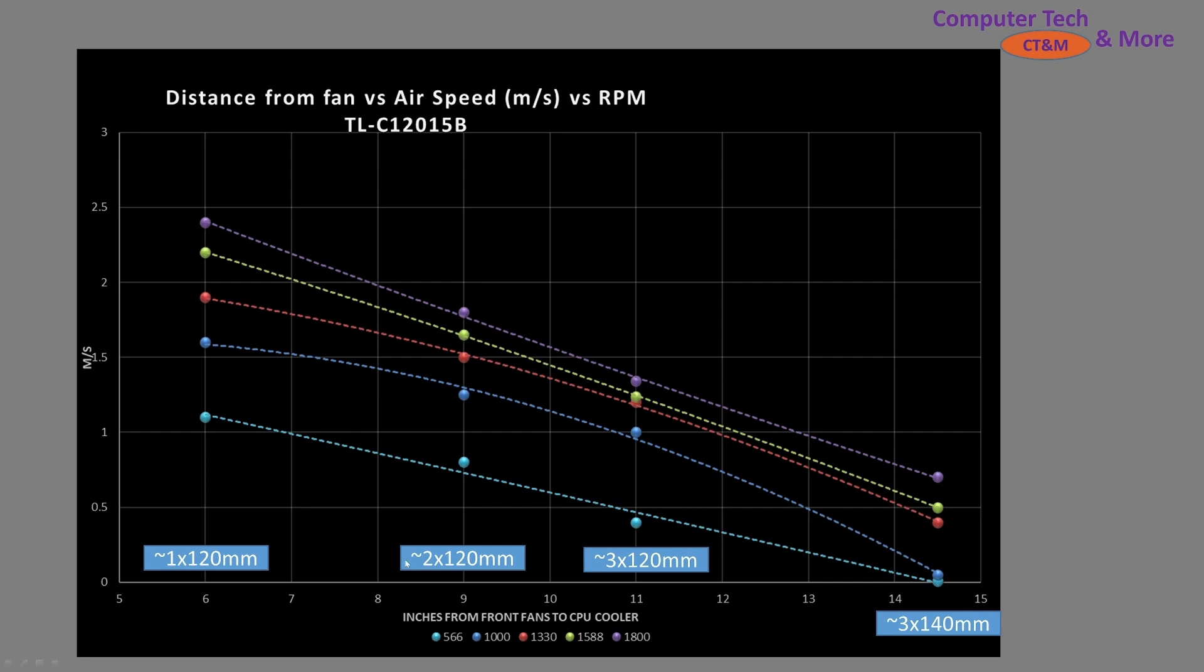Then we have the 9-inch mark, which would be compact towers. Think a case that can hold a standard ATX motherboard, but not a lot of extra room beyond that. For 220-millimeter class fans, you have the 11-inch mark. For 320-millimeter class fans, or a standard 360 AIO would fit inside that computer case. And then we have the 14.5-inch mark, which is truly large towers. Think a case that can hold 340-millimeter class fans.